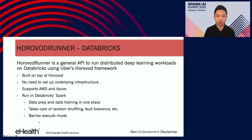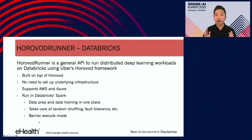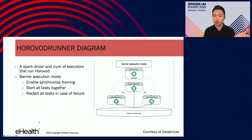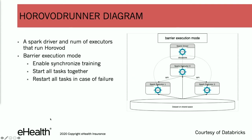You will enjoy all the benefits coming with Spark, like random shuffling, fault tolerance, and the ability to use it in a notebook. Databricks Spark uses barrier execution mode to schedule jobs, because Spark jobs usually run embarrassingly parallel and independently. However, Horovod requires coordination among all different nodes to synchronize all the gradients. In the Horovod runner diagram, you have a Spark driver and a number of processing units running Horovod, using barrier execution mode to enable synchronized training and synchronize gradients at the end of each batch. All tasks start together and restart together in case of failure.